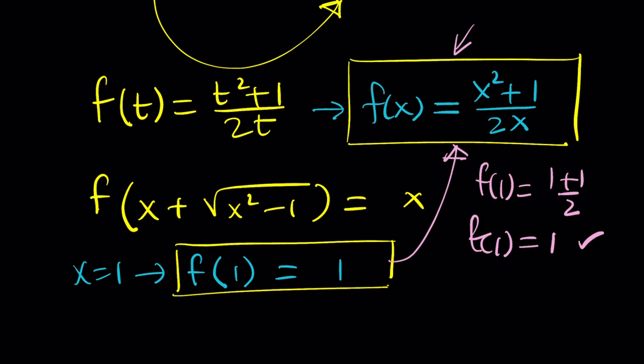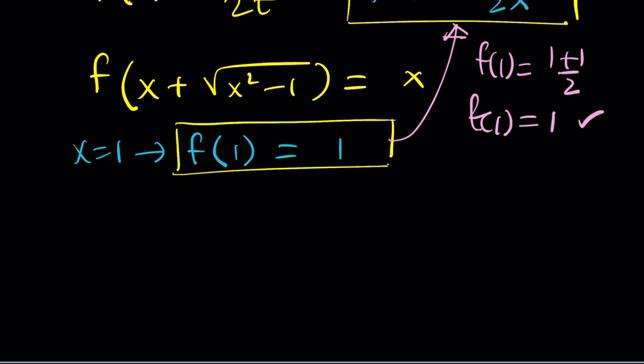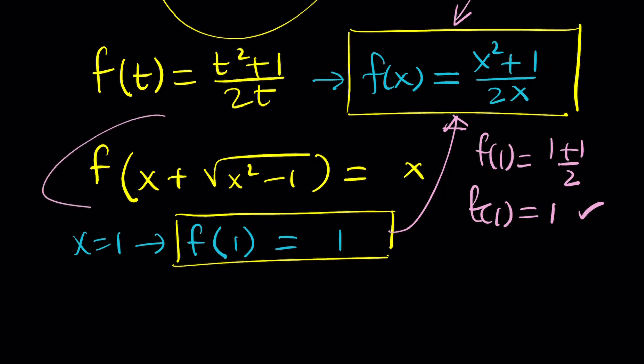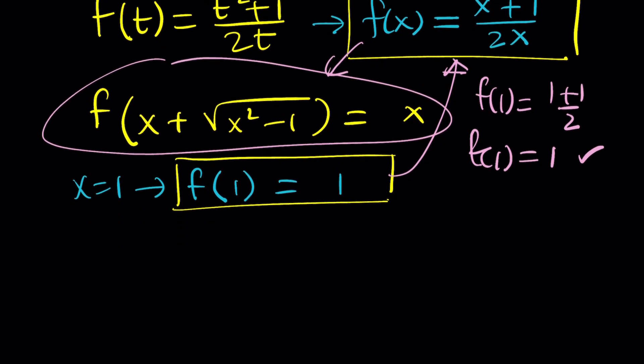But let's go ahead and look at the checking part. So we got the f of x, and we have the original equation, this one. Let's go ahead and plug it in. So from f of x, how do you find this?